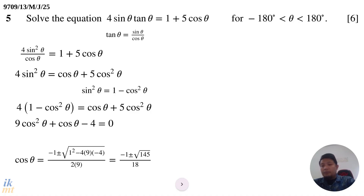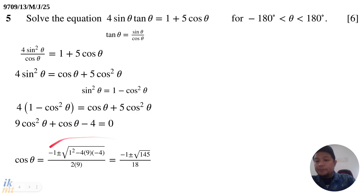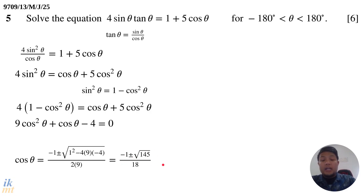Applying the quadratic formula — negative b plus or minus square root of b squared minus 4ac, divided by 2a — you will get cosine theta equals negative 1 plus or minus square root of 145, divided by 18.